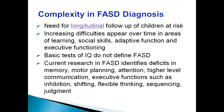One of the needs is to provide longitudinal follow-up of children at risk. Children naturally change over time, and so do children who have FASD. Their brain profile at five years of age is quite different from 15 years of age at the point they're needing to transition into adult services. In the ideal model, we should be providing assessment at key transition points of their brain functioning. Increased difficulties do appear over time in all areas of learning, social skills, adaptive functioning, and executive functioning. We know that basic tests of IQ alone do not define FASD — it's often a bit of false security if you go by an IQ score alone. Current research indicates we need assessments looking for deficits in memory, motor planning, attention, higher-level communication, and executive function such as inhibition, shifting, flexible thinking, sequencing, and judgment.